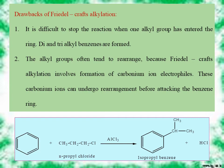However, there are certain drawbacks of Friedel-Crafts alkylation. The first drawback is that it is very difficult to stop the reaction when one alkyl group has entered the ring, because alkyl groups are electron-releasing groups and ring activators. If methyl benzene is formed, it promotes further methylation, giving di- or tri-methyl benzene. The second drawback is that alkyl groups often tend to rearrange.